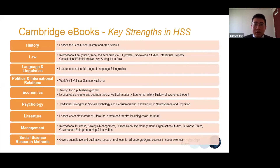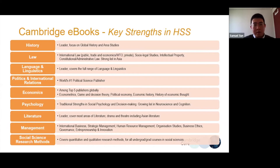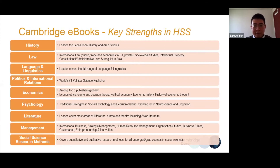Our strong subjects in humanities and social sciences include history, language and linguistics, politics and international relations, and psychology — where we have traditional strength. We also have literature, with many titles focusing on Shakespeare, though this is not very popular outside the UK. We also have some titles in management.